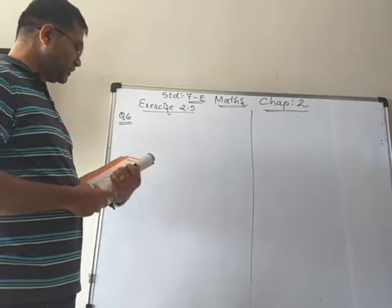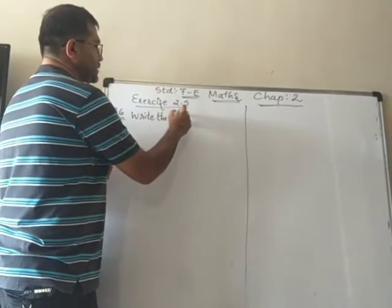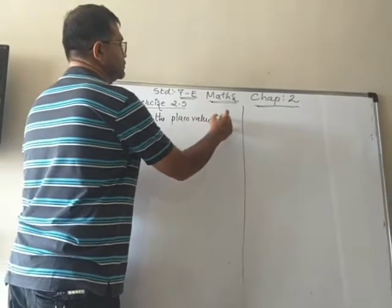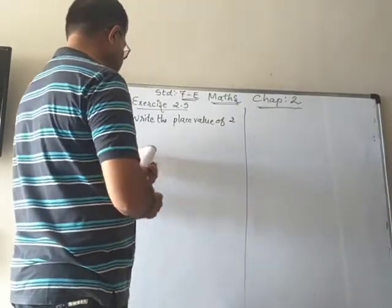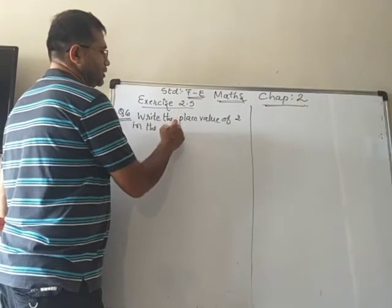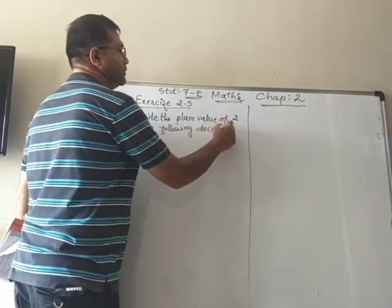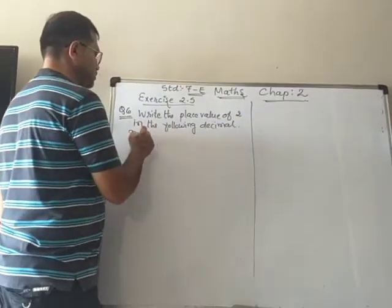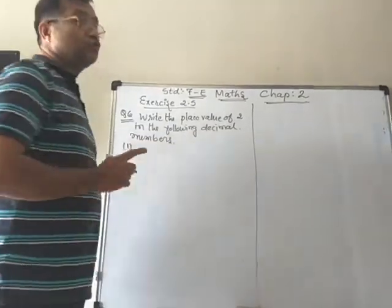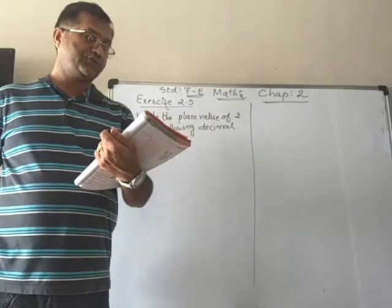We will check: write the place value of 2 in the following decimal numbers. So the numbers are given, and in each number we have to find the place value of 2.